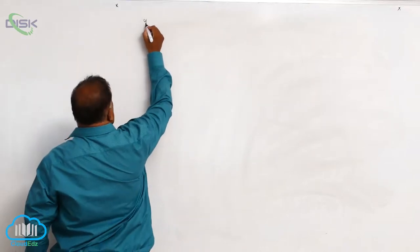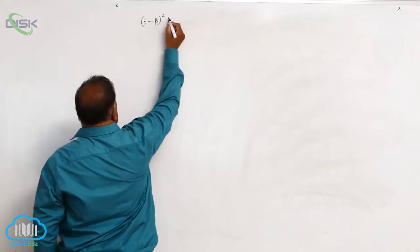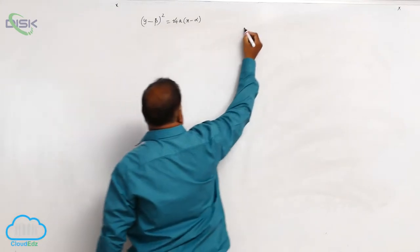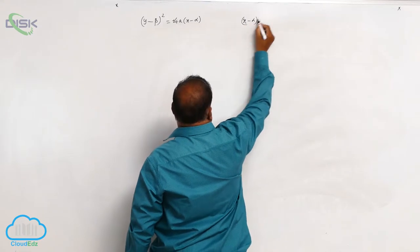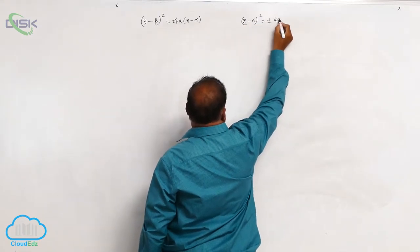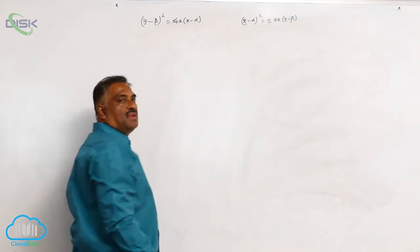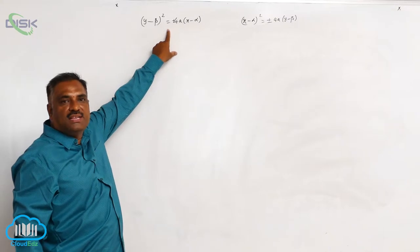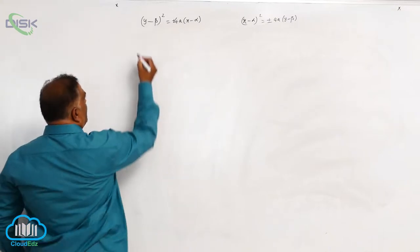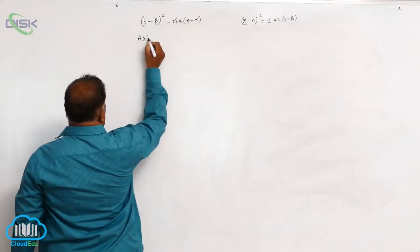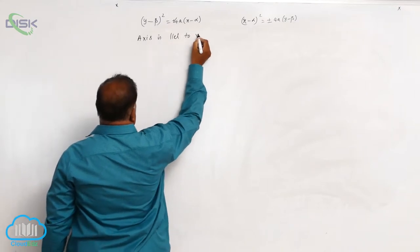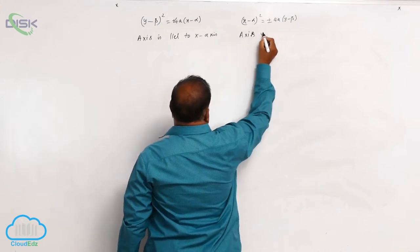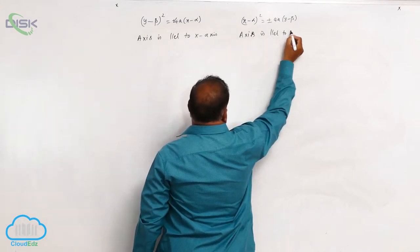We will discuss the speciality of (y - β)² = ±4a(x - α) and (x - α)² = ±4a(y - β). In our previous discussion, I told you the axis of the parabola is parallel to the x-axis in the first case, and in the second case, the axis is parallel to the y-axis.